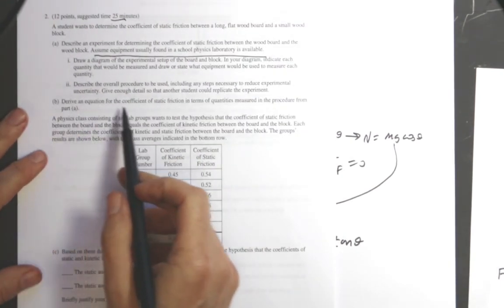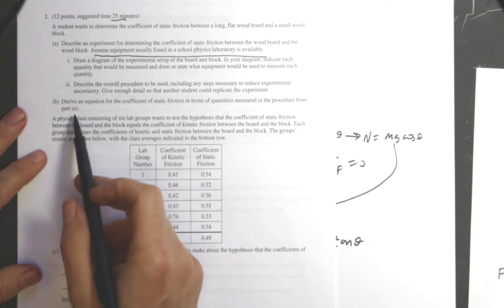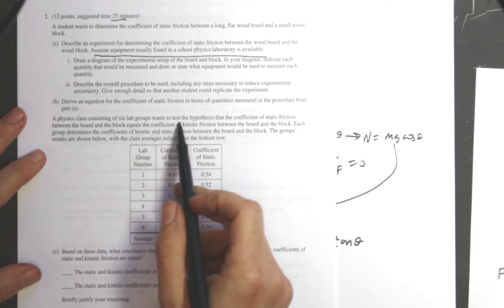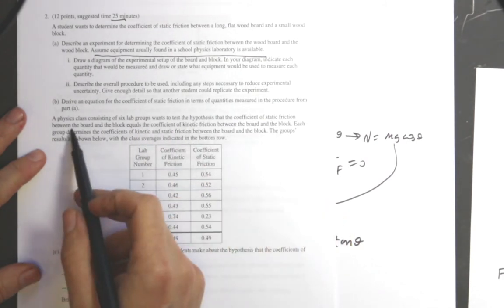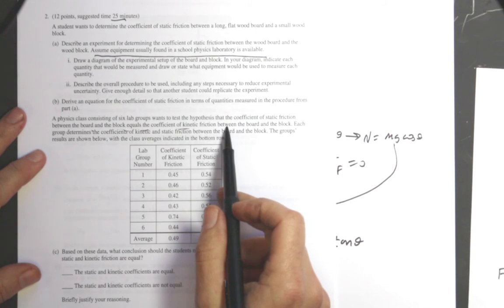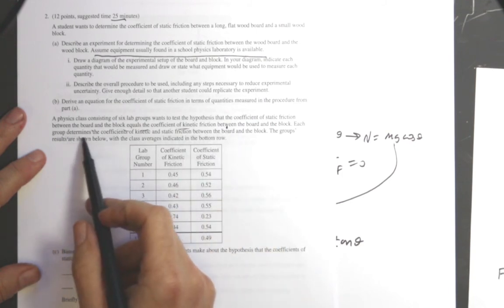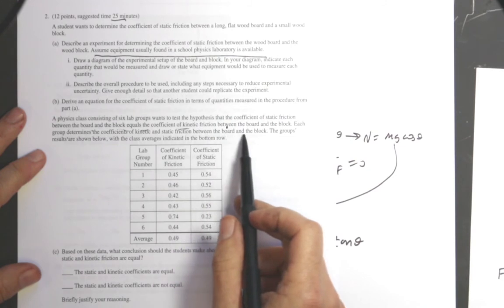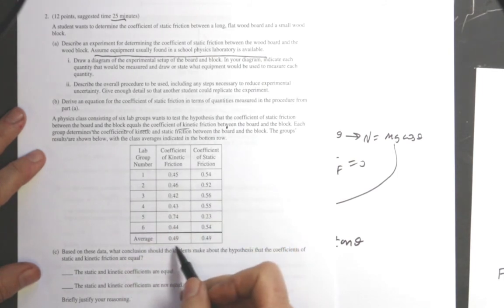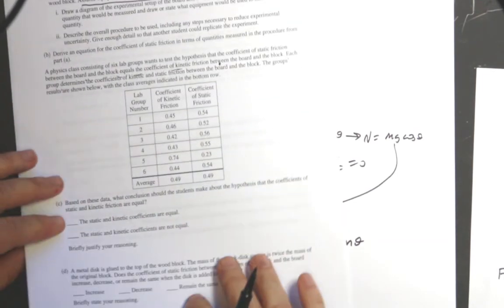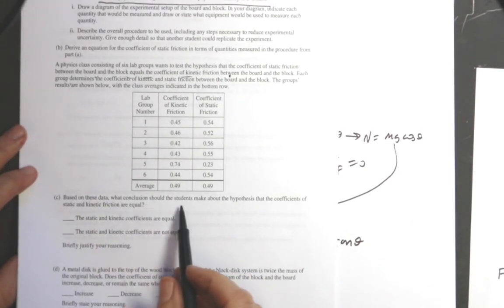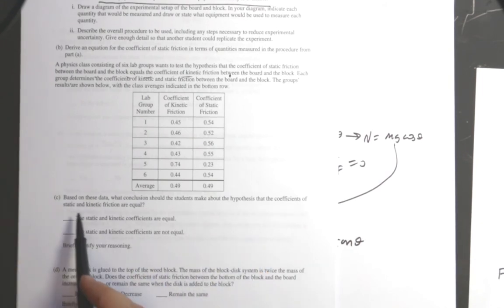Part b: derive an equation for the coefficient of static friction in terms of the quantities measured. Okay, I did that already. A physics class consisting of six lab groups wants to test the hypothesis that the coefficient of static friction between the board and the block equals the coefficient of kinetic friction between the board and the block. So I want to show that the coefficients are the same. They determine the coefficient of kinetic friction and static friction on the board and block, the group's results. This is going to make me not happy.